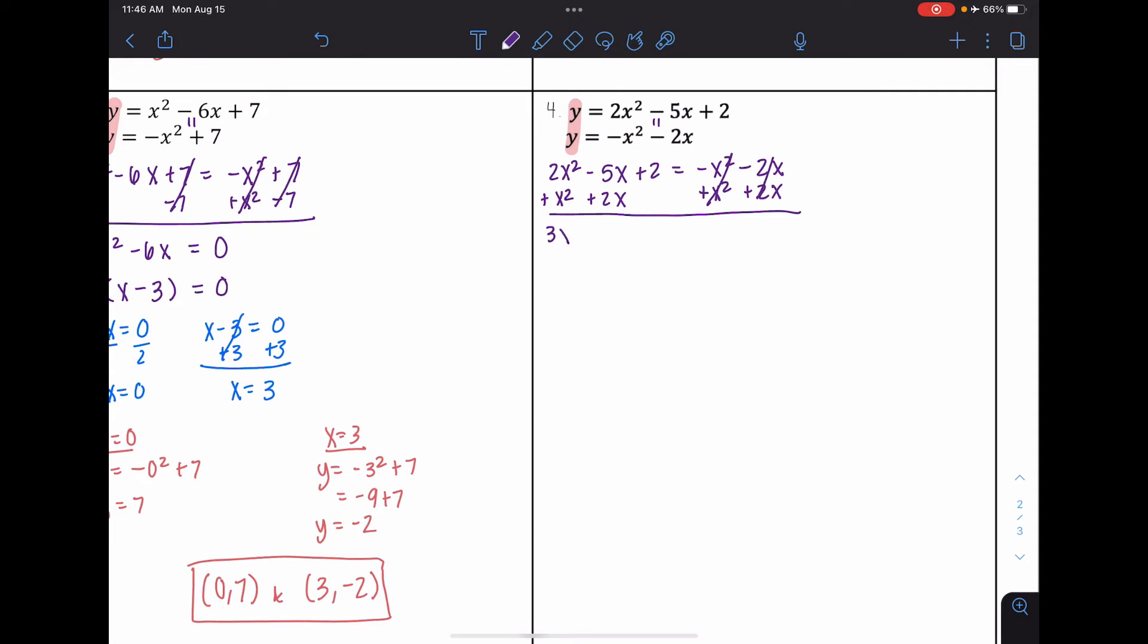So I get 3x squared minus 3x plus 2 is equal to 0. So you could go ahead and try and factor this using the AC method. So 3 times 2, I get 6. And I'm looking for two numbers that are going to add to negative 3. However, I see with both of my factors, neither of them add to negative 3. And so this can't be factored, so that means I want to go ahead and use the quadratic formula.